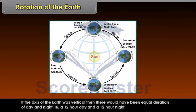If the axis of the earth was vertical, then there would have been equal duration of day and night — that is, a 12-hour day and a 12-hour night.